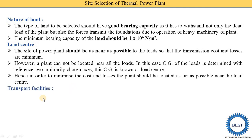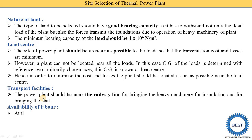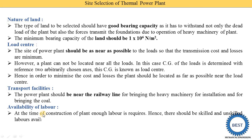Next point is transport facilities. The power plant shall be near the railway line for bringing heavy machinery for installation and for bringing coal. Next point is availability of labor. At the time of construction of the plant, enough labor is required. There shall be skilled and unskilled labor available at reasonable rates near the site of the plant.